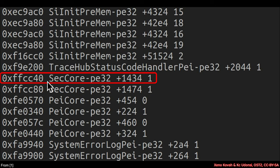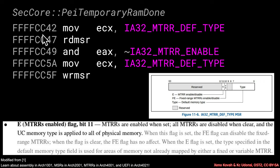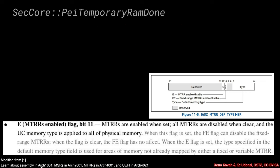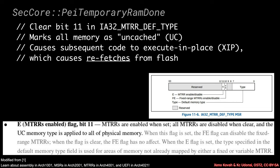When looking at all the double fetches occurring, one caught their eye at address FFCC40. The assembly at that address clears bit 11 in a particular register. Bit 11 is the E-bit: the manual says that if it is set, MTRRs are enabled; when cleared, all MTRRs are disabled and the uncached memory type is applied to all physical memory. Understanding this requires knowledge of assembly, MSRs, and MTRRs — topics covered across OST2 classes.